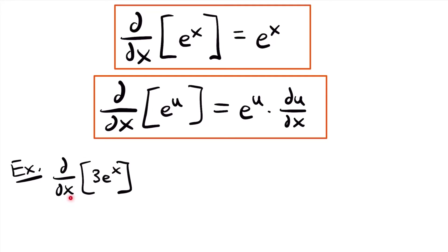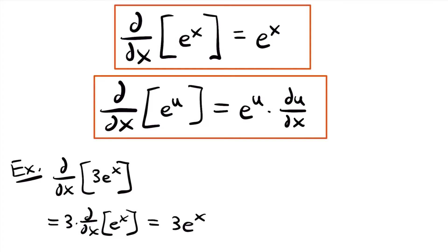For our first example, the derivative with respect to x of 3 times e to the power of x: we can pull out the constant multiple, giving us 3 times d/dx of e to the x, which is just e to the x. So the answer is 3 times e to the power of x — the exact same function, but that is the derivative.